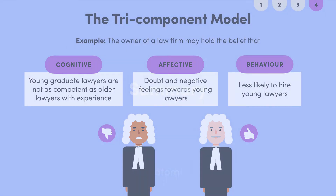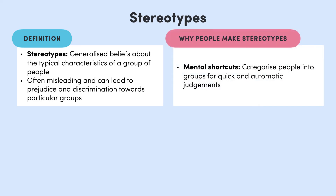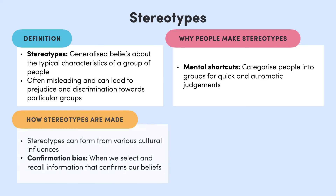Let's wrap up. In this video we explained that stereotypes are generalized beliefs about the typical characteristics of a group of people. Stereotypes can often be misleading and can lead to prejudice and discrimination towards particular groups. The main function of stereotypes is to categorize people into groups so we can make quick and automatic judgments about them — these are known as mental shortcuts. We learned that stereotypes can form from various cultural influences as well as confirmation bias, which is when we select and recall information that confirms our beliefs.